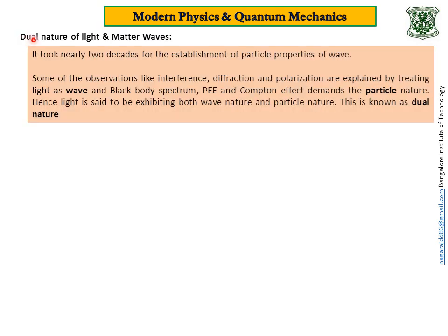We next proceed with dual nature of light and matter waves. See, it took nearly two decades for the establishment of particle properties of wave that is almost from 1900 to 1920. Some of the observations like interference, diffraction and polarization are explained by treating light as a wave. And some other problems such as black body spectrum, photoelectric effect, Compton effect, pair production demands the particle nature. Hence, light is said to be exhibiting both wave nature and particle nature. This is known as dual nature.